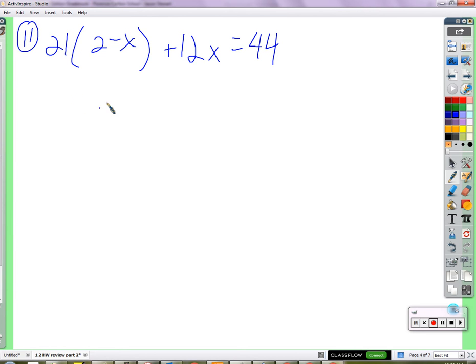You would do 21 times 2 and do that. 42. And then you would do 21 times x, which would be, there's an invisible 1 by the x, so it's 21x. Okay, it's negative, right? Negative 21x. What did Robert just do? What's that called? Distribute. Distribute. You distributed the 21, that's great. 12x equals 44. Now what?